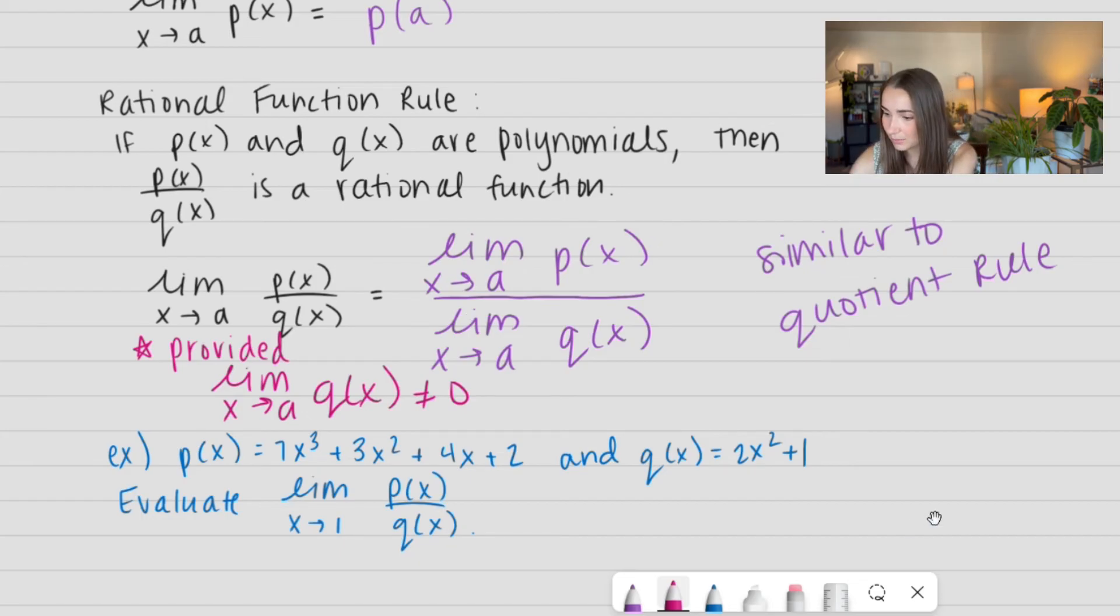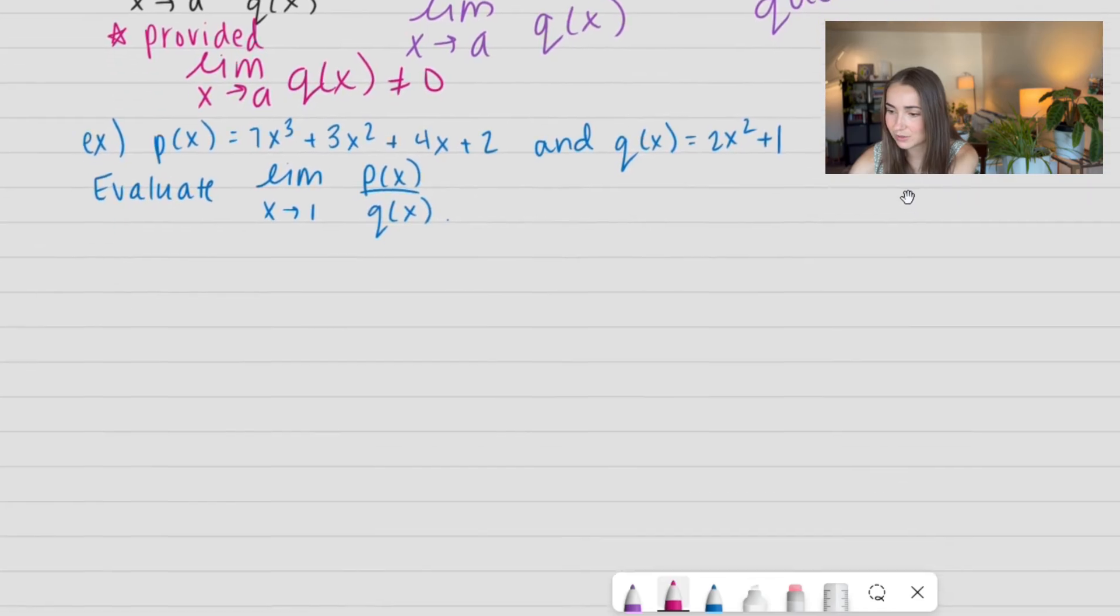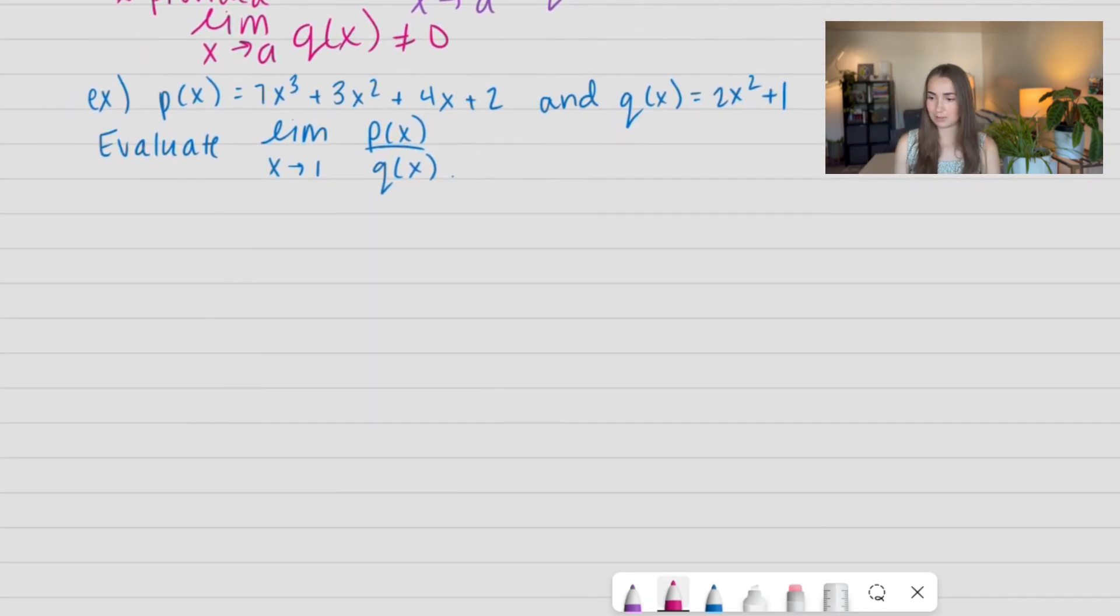We have a great example here. We have P of X is equal to 7X cubed plus 3X squared plus 4X plus 2. So, the same polynomial we were working with before, but now we have an additional polynomial, Q of X, that is equal to 2X squared plus 1. We are going to go ahead and evaluate the limit as X approaches 1 of P of X divided by Q of X.